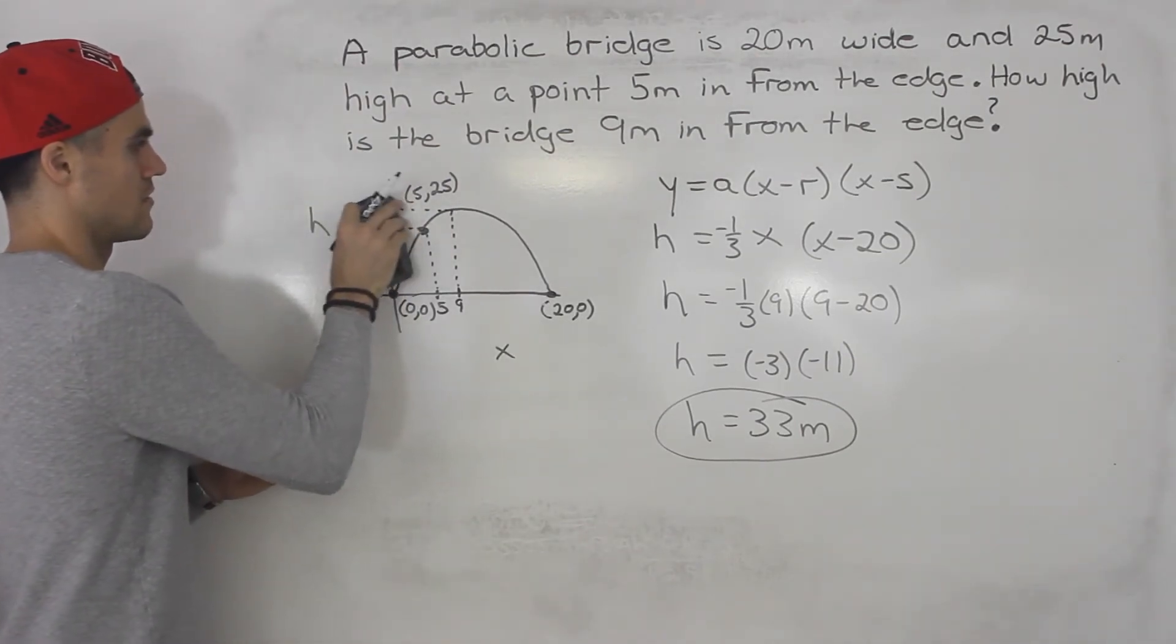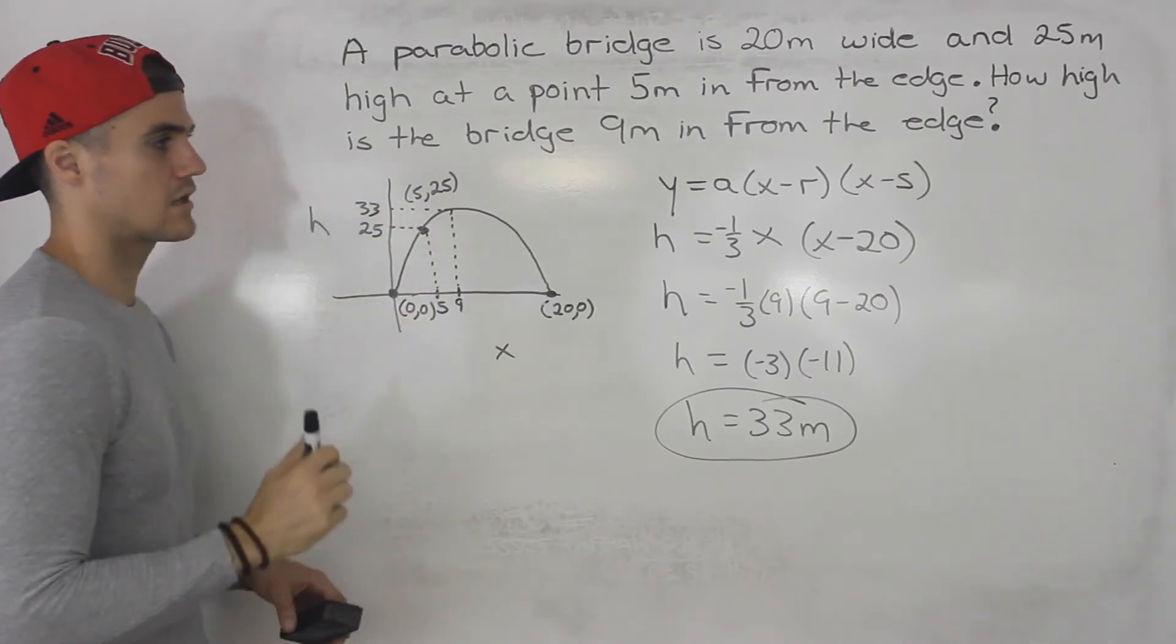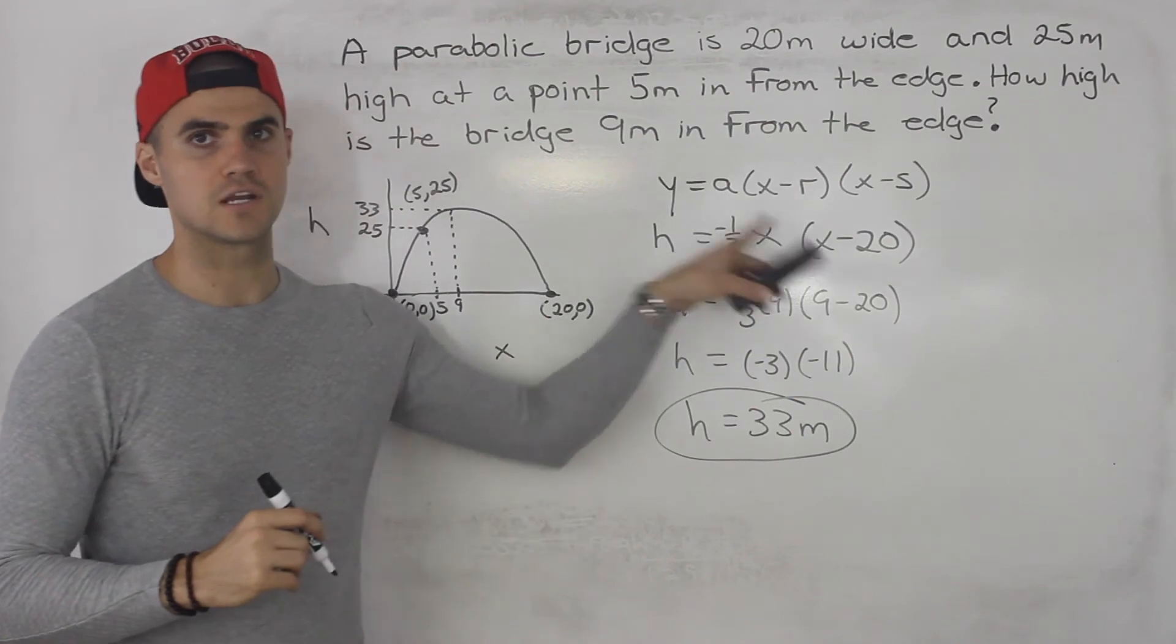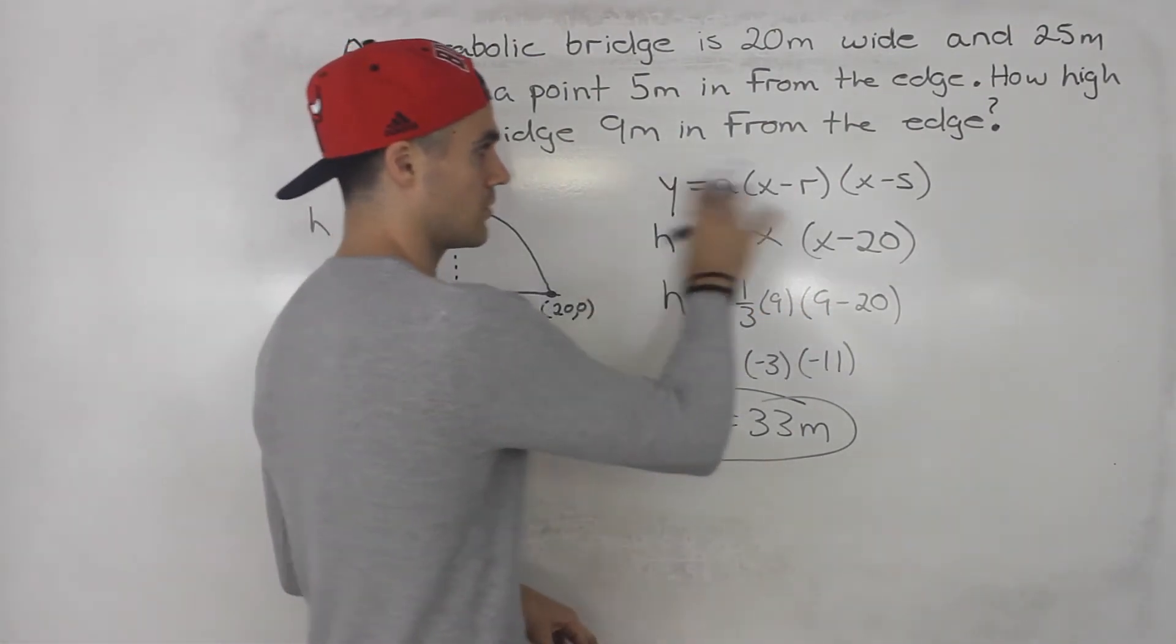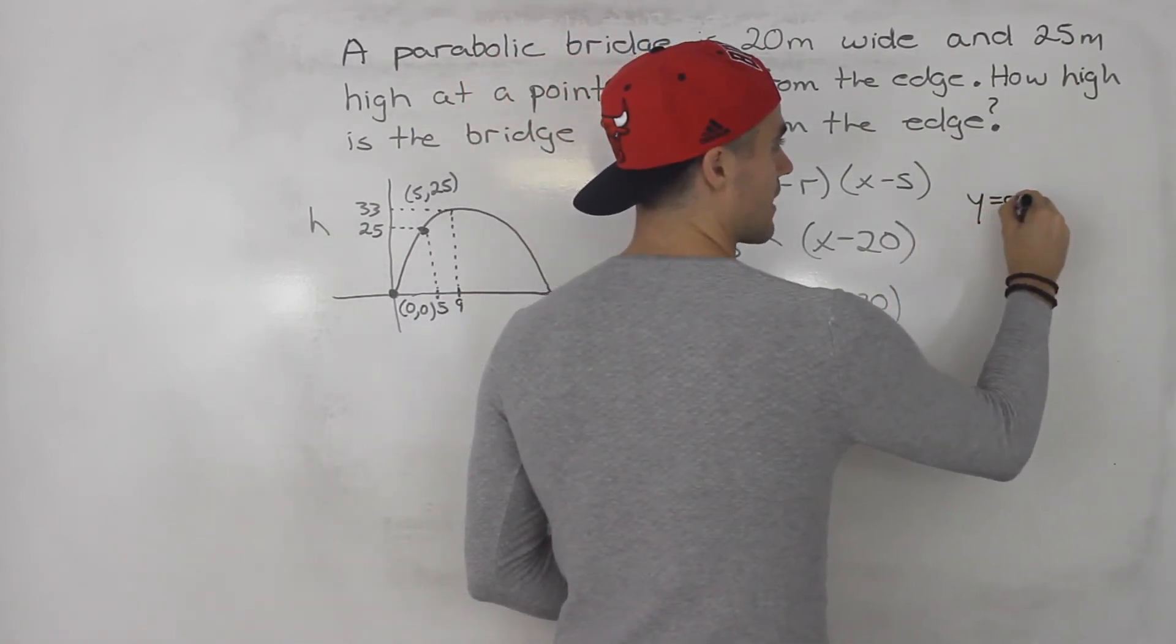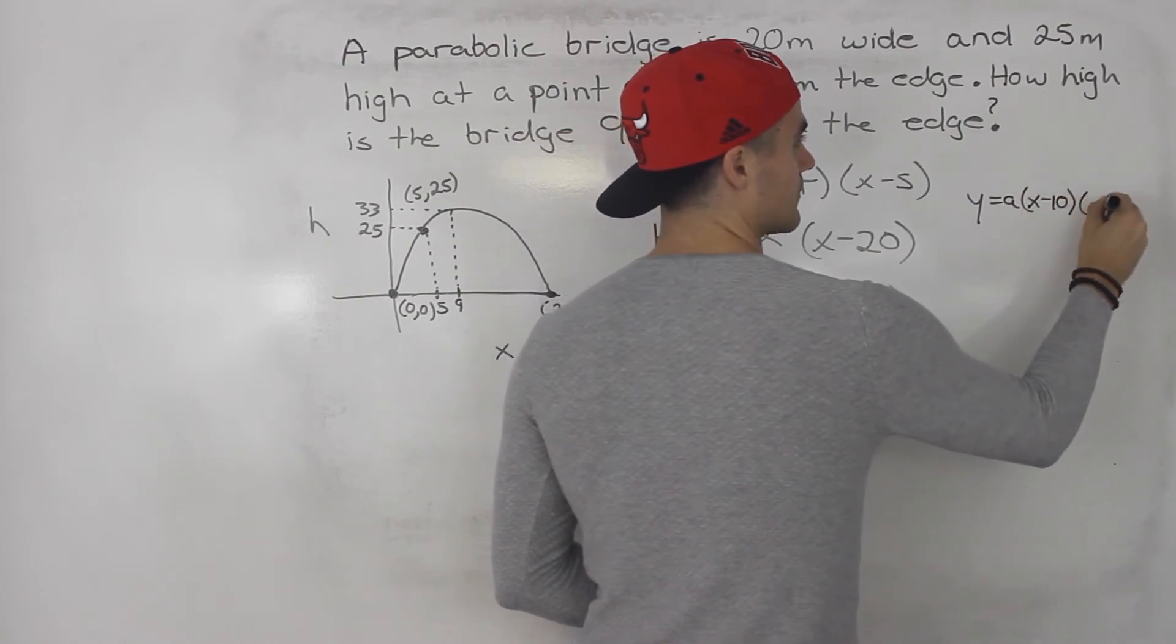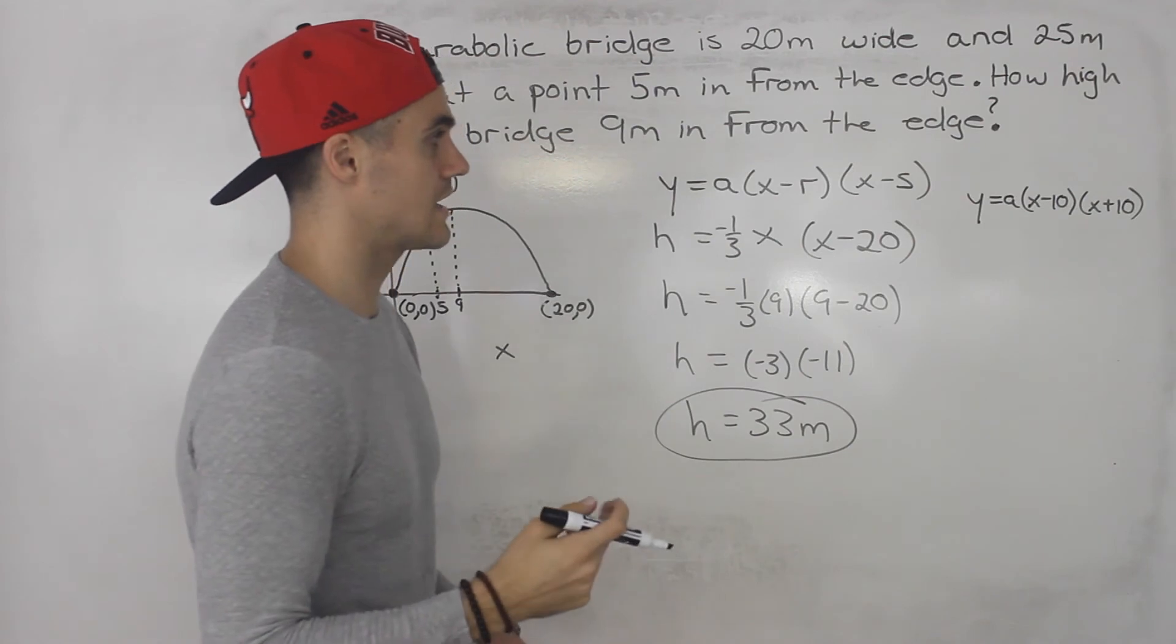So this height here is 33 meters, 9 meters in from the edge. And this is the same answer you should get if you did it the other way. If you take that other diagram and you want to put it into factored form, basically, you'd have a x minus 10 x plus 10. Right? Those were the intercepts plus and minus 10.